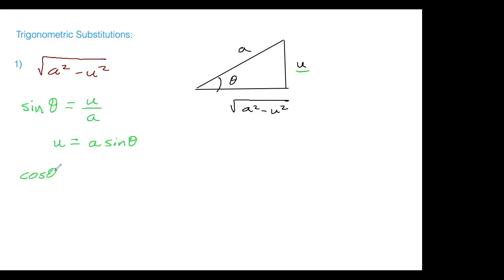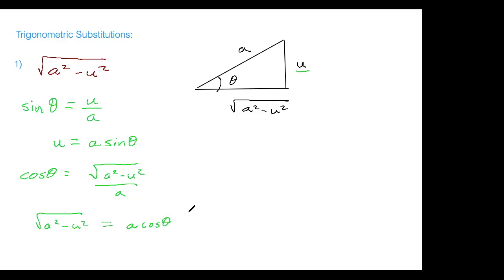The cosine of theta is adjacent over hypotenuse. Moving the a over gives us that √(a²-u²) = a cos θ. This allows us to make a trig substitution into our integrand — a complete change of variables away from u, converting everything to integrating with respect to theta.